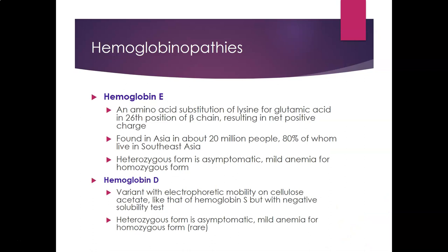Hemoglobin E involves an amino acid substitution of lysine for glutamic acid at the 26th position of the beta chain, also resulting in a net positive charge. It is more predominant in Asia—about 20 million people are affected, 80% in Southeast Asia. The heterozygous form is asymptomatic; the homozygous form causes mild anemia. Hemoglobin D has electrophoretic mobility on cellulose acetate similar to hemoglobin S but gives a negative solubility test; the heterozygous form is asymptomatic and the rare homozygous form produces mild anemia.